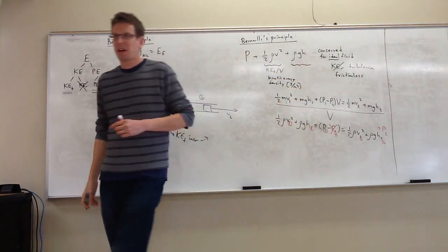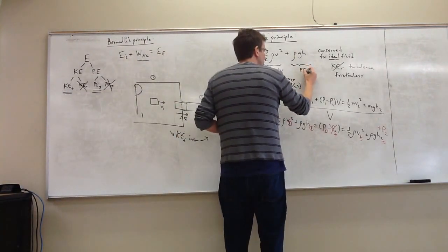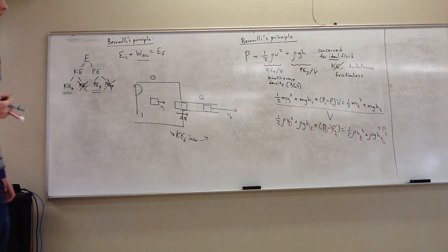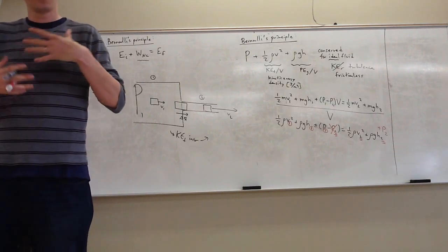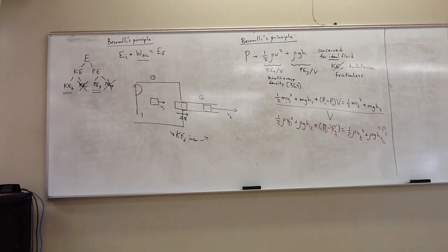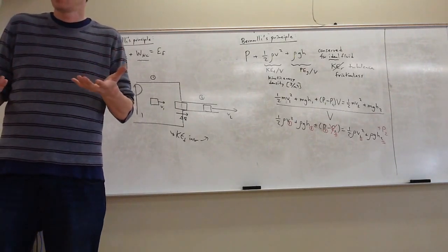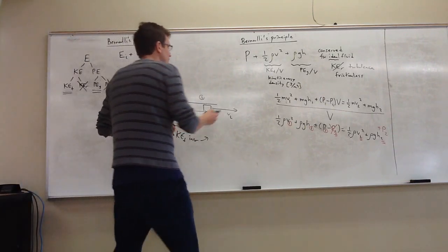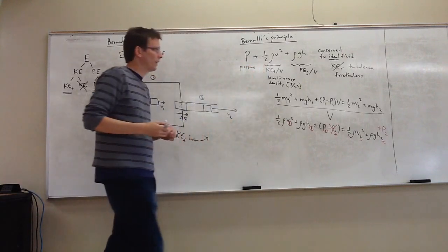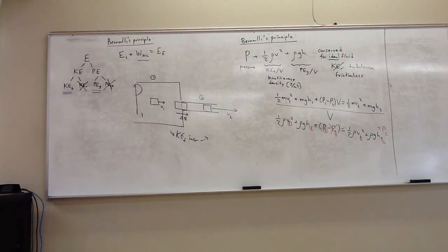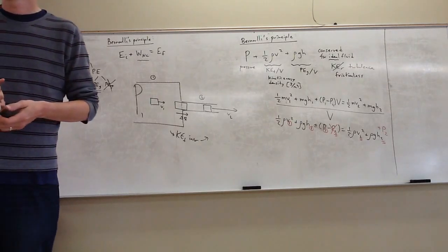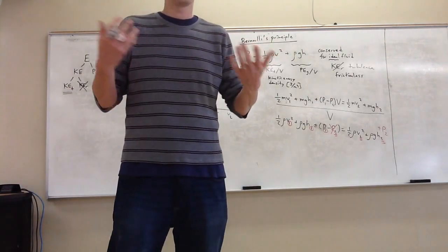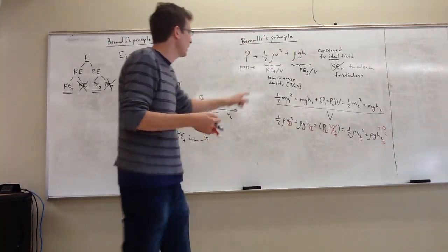Same thing with the next term. This was good old mgh until I divided it by volume. What this is, is the gravitational potential energy per unit volume — I like to call it potential energy density of the fluid. Then pressure, which seems like it really shouldn't even be on the list. Pressure is force per area. What is it doing added to kinetic energy density? It seems like you're trying to add a meter to a second — they don't seem like like things.